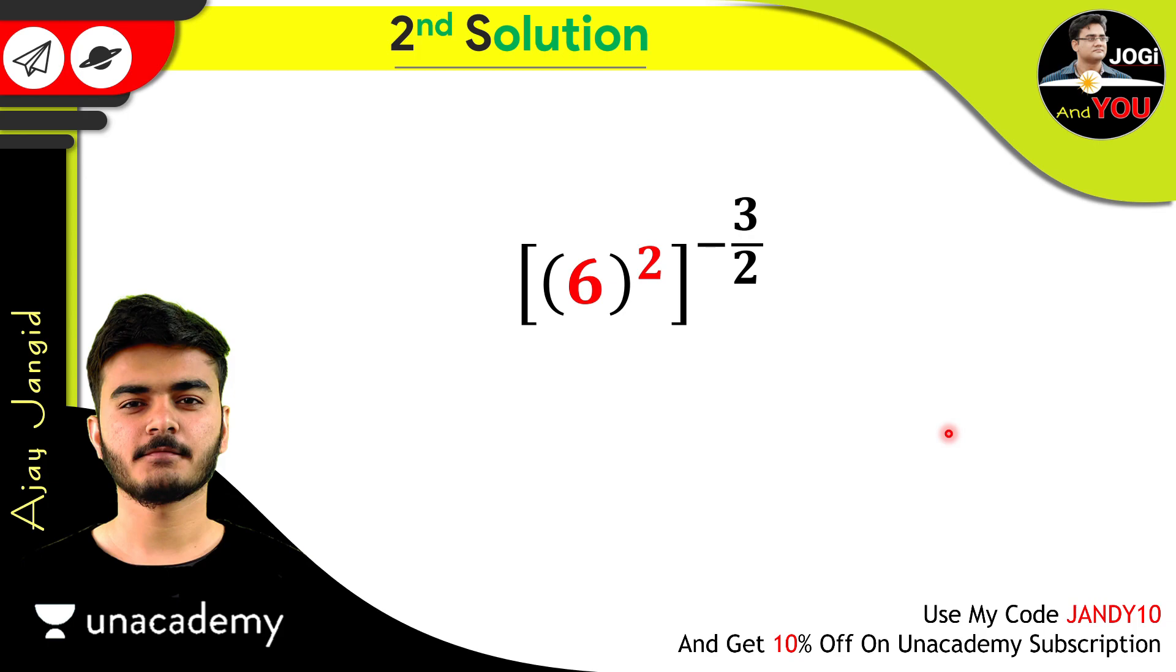Now you see there's a power on the power. And you know very well if there's any power on the power, then both power will be multiplied with each other. Just like this. And this 2 will be cancelled out with this 2. So it will be something like 6 to the power minus 3. So you see the power is in minus. And for making this power in the positive, just reciprocal this 6. And it will be 1 upon 6 to the power 3, which is positive.